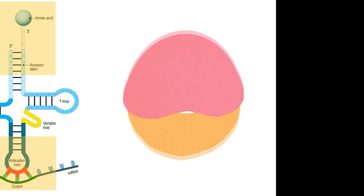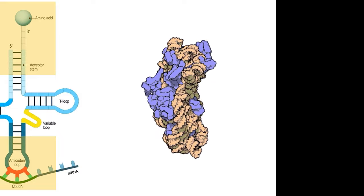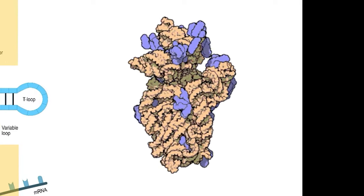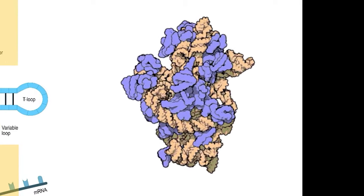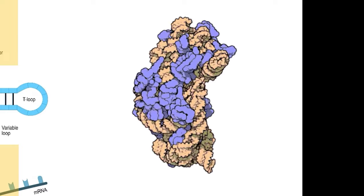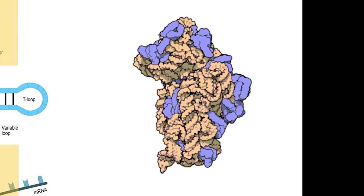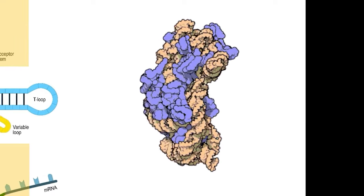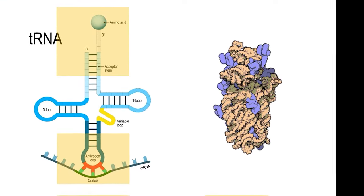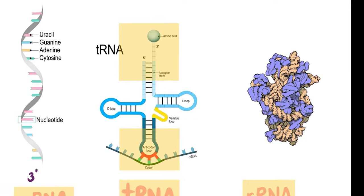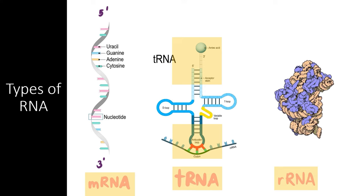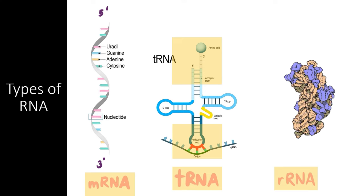While ribosomes themselves are mostly made of protein, they have an RNA component that intertwines with the protein structure, known as rRNA. This rRNA aids in the process of translation by holding mRNA and tRNA in place as translation unfolds. It also helps catalyze the dehydration reaction needed to form new peptide bonds between amino acids. In addition to these forms of RNA, scientists are constantly discovering new uses for RNA within cells — including microRNA that has functions in regulating genes within the nucleus, RNAs that function as enzymes for certain reactions, and many other special-function RNAs that are still being discovered.